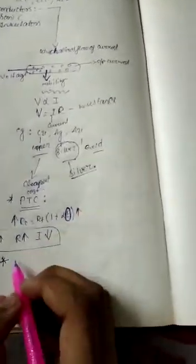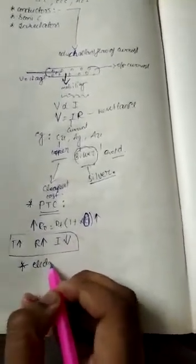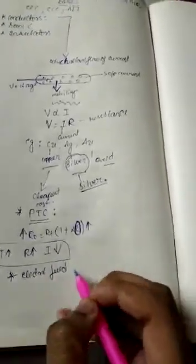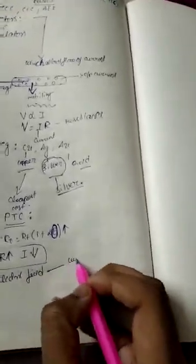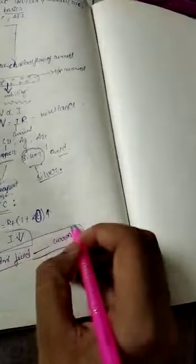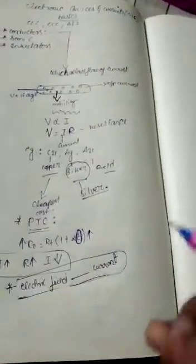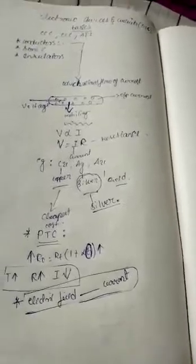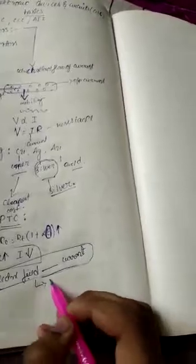Another key point: in the conductor, current conduction happens only due to the electric field — that is, voltage applied. Conductors conduct current only via the electric field. This is not exactly a drawback, but there is a slight disadvantage compared to semiconductors, which we will see next.